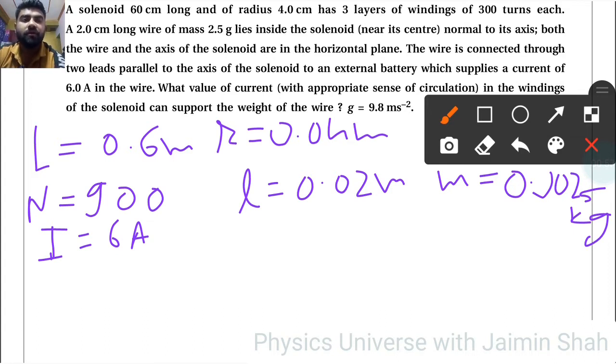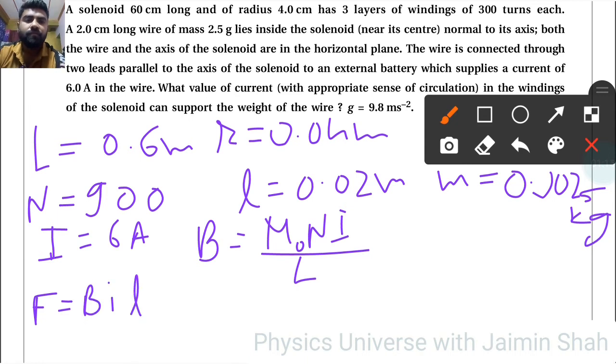So first of all, magnetic field due to the system: μ₀NI/L. Now force because of this current carrying wire, that is BIL, so by putting values here we will get μ₀NI/L times IL. So the left hand side is mg.